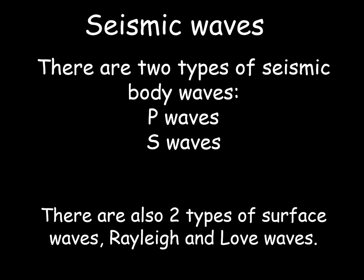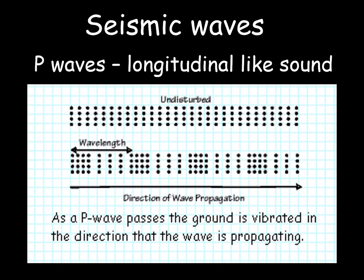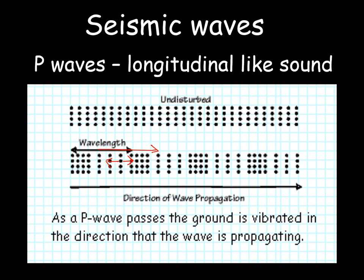Sound waves are longitudinal — the vibrations occur in the direction of wave propagation. As the wave goes this way, any given particle is just going backwards and forwards. These waves can propagate through any medium, even a gas, hence why we can hear in air very efficiently. The second kind of seismic wave are S waves — these are transverse. Particles vibrate up and down as the wave propagates, perpendicular to the direction of wave propagation.